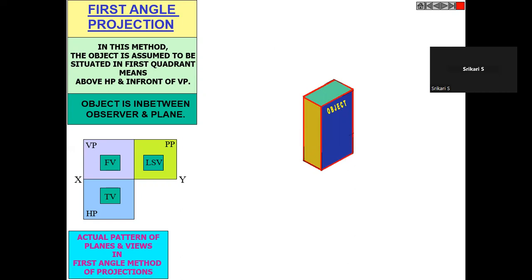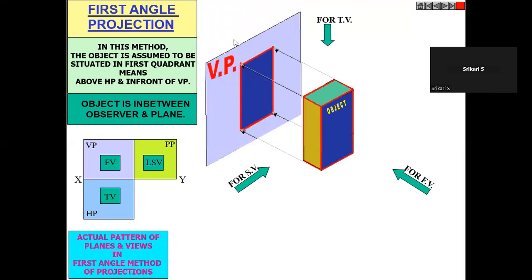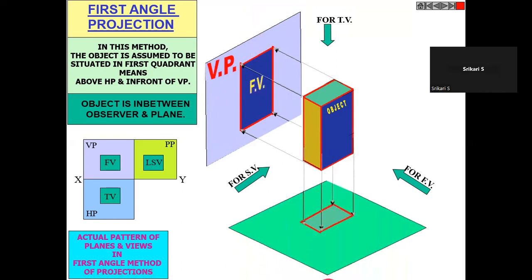This is the isometric view. The blue is the front view. As you know, this is the vertical plane, so on the vertical plane we will get the front view. This is the horizontal plane, and in the horizontal plane — what we call the argent plane — we will get the top view, seen from this direction.